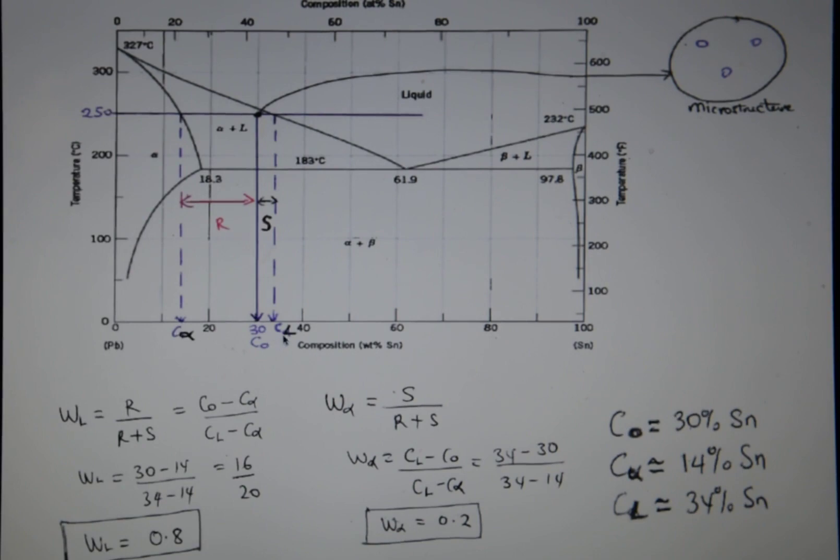Now the next part of the question is to find the weight fractions. Now to find the weight fraction of liquid, that's W L, which is equal to R over R plus S. So we're going to use the lever rule. So R is this region here.